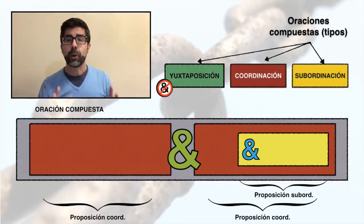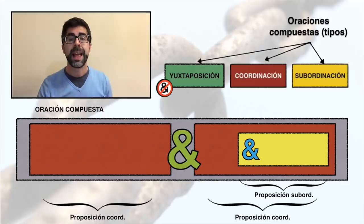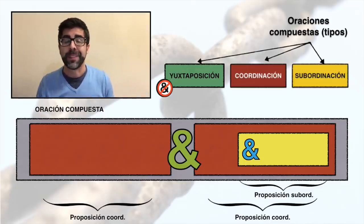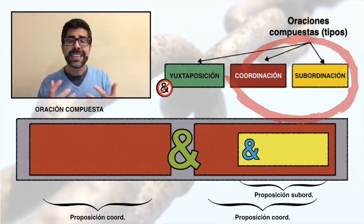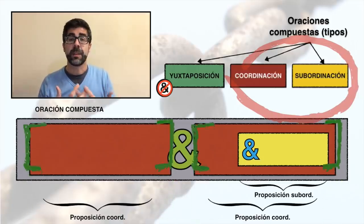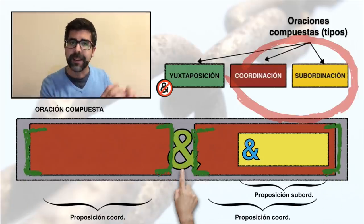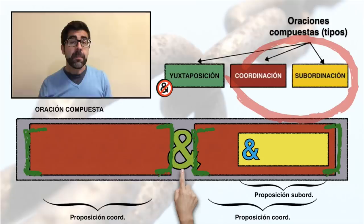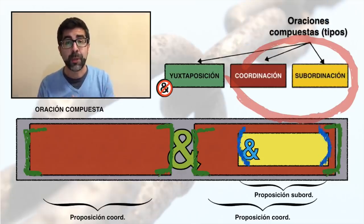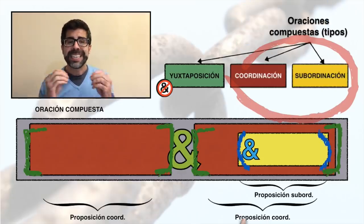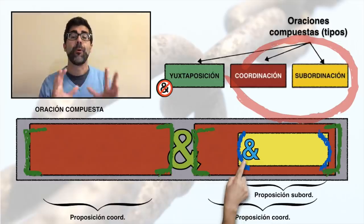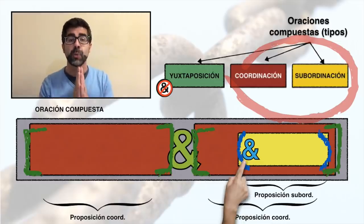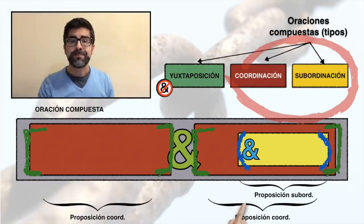Los Nexos permiten construir oraciones compuestas por coordinación, pero también por subordinación. En las oraciones compuestas por coordinación, el Nexo no se integra dentro de ninguna proposición, queda al margen, excluido de ellas. En cambio, en las oraciones compuestas por subordinación, el Nexo está integrado y forma parte de la proposición subordinada.